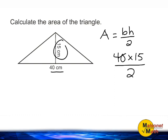40 and 2 can be cancelled or reduced to 20 over 1. And now the problem is a little bit easier for us to solve. 20 times 15 is 300.